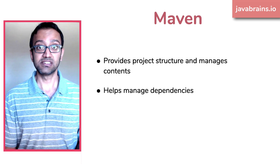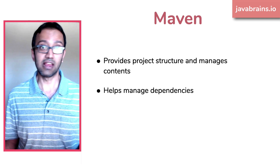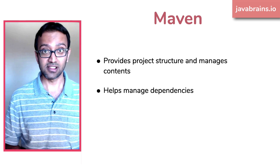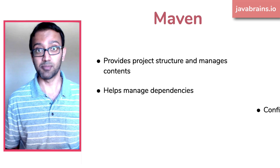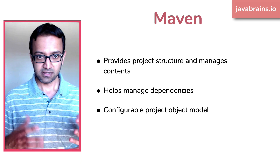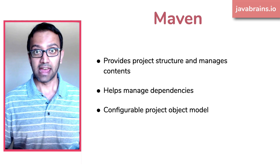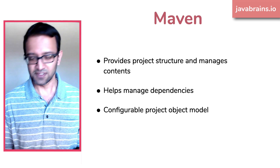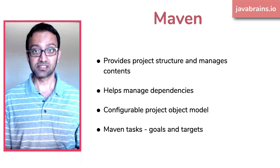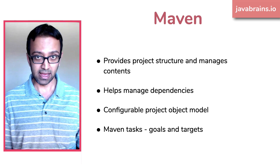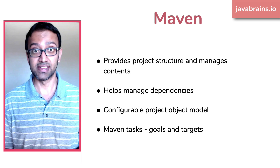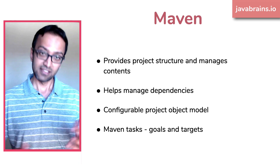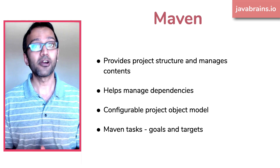Maven helps manage dependencies for your project — if you have dependencies on other libraries or frameworks, you don't have to go to websites, download, and search for jars. Maven has a really elegant solution. It also has the Project Object Model, which it uses to track your project and you can make tweaks to it — it's opinionated, but it listens to you. And Maven provides tasks for building, compiling, deploying, and all those things with a task runner where you can specify the order.